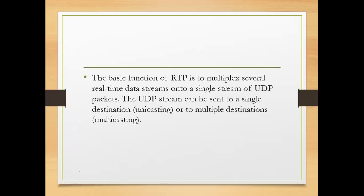The basic function of RTP is to multiplex several real-time data streams onto a single stream of UDP packets. When real-time data is transmitted, it stores multiple real-time data streams in a single UDP packet. The UDP stream can be sent to a single destination, which is unicasting, or to multiple destinations, which is multicasting. So both unicasting and multicasting are possible.